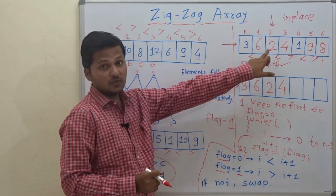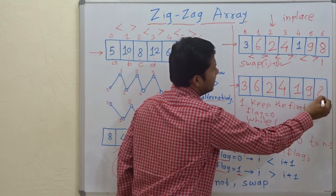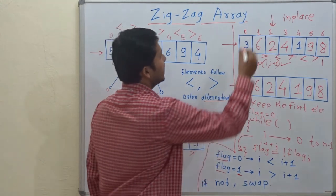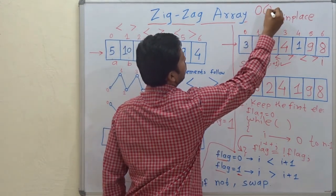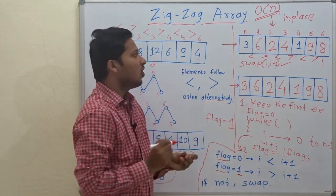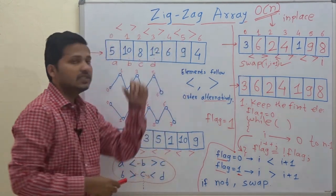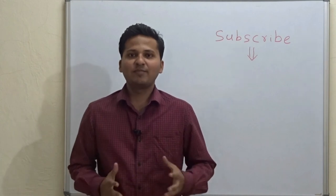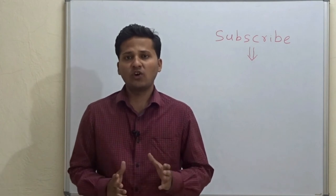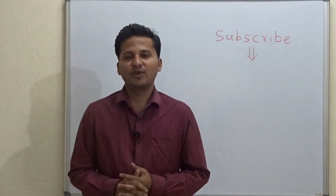This is how we convert a normal array into a zigzag array. The output is written as 1, 9, and 8 for the last part. Remember this is an in-place procedure with O(n) time complexity and constant space complexity. Please subscribe to my channel as I post algorithm videos every day, and if you want a video on any particular topic please mention it in the comments below. Thank you.